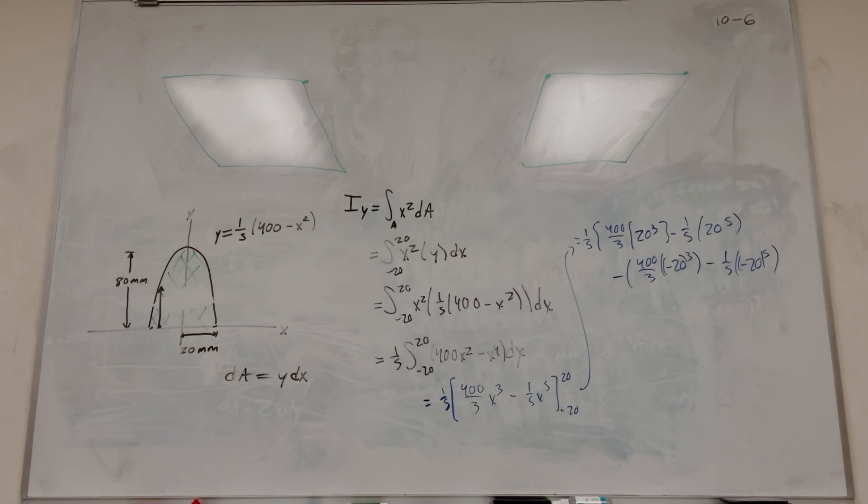All right, I typed it out right. So then if you do this, just plug this in your calculator. I have Iy is equal to 171... I did that wrong. 171 times 10 to the third millimeters to the fourth. And there you go. So that's the answer to the problem.